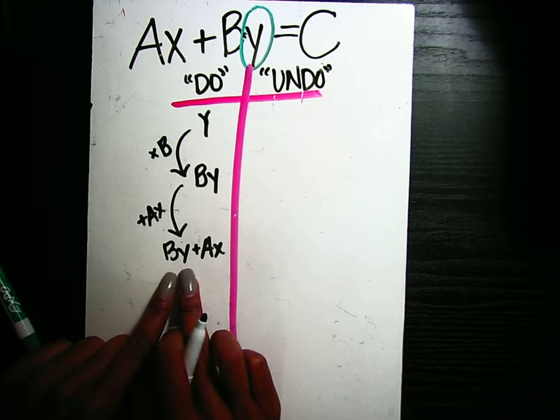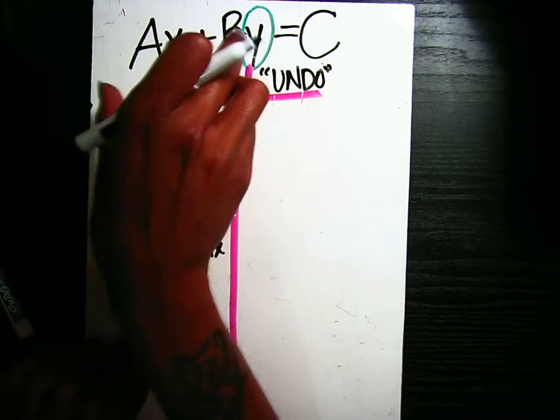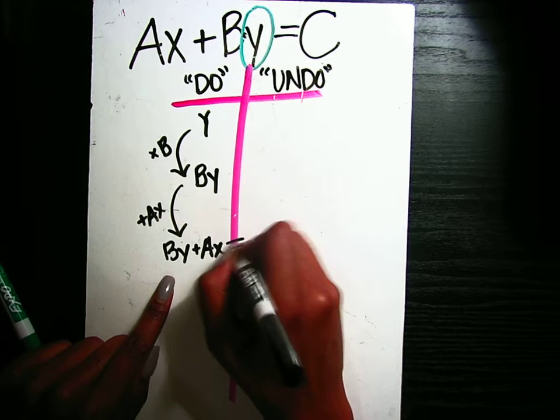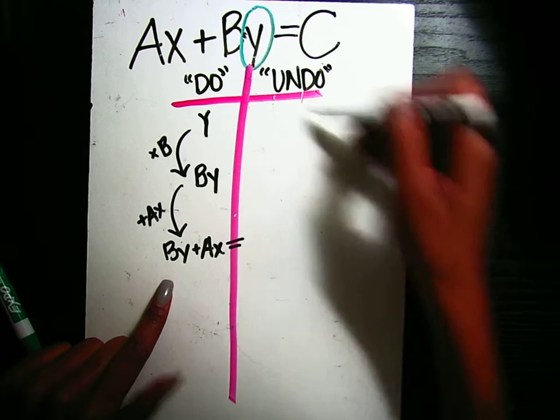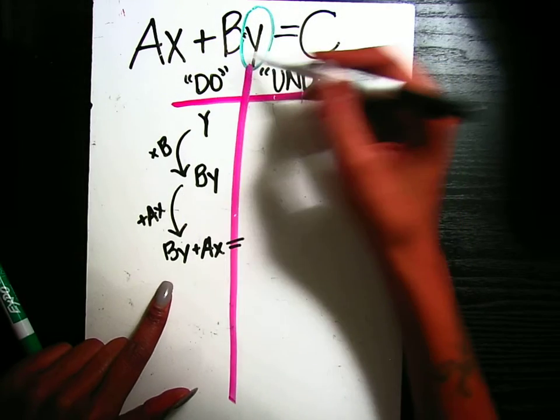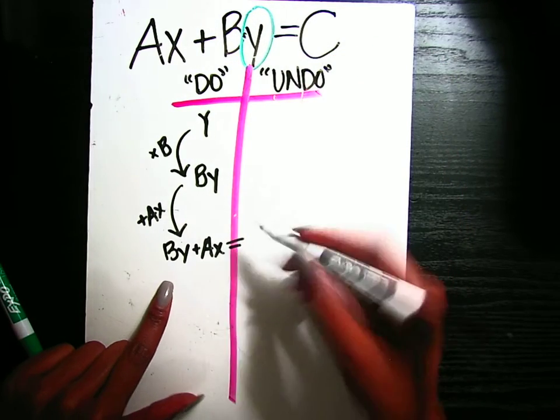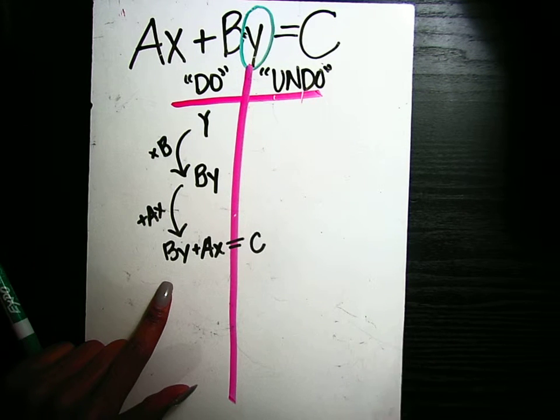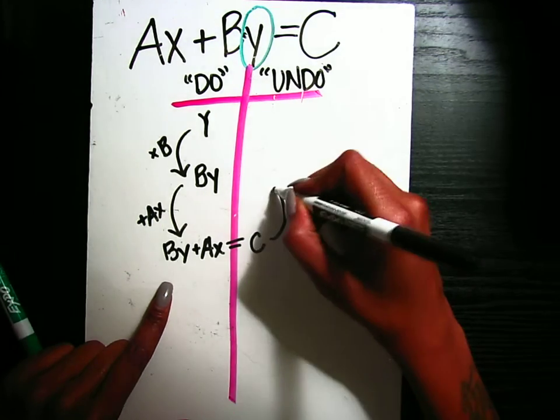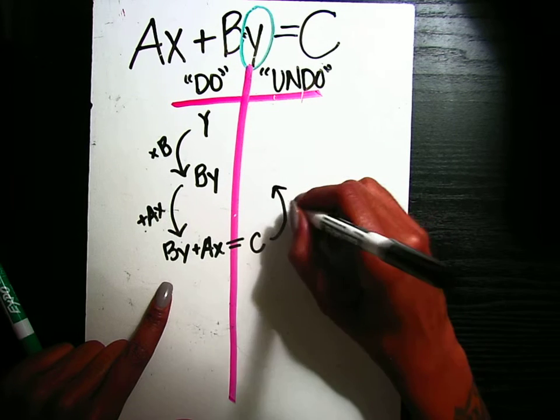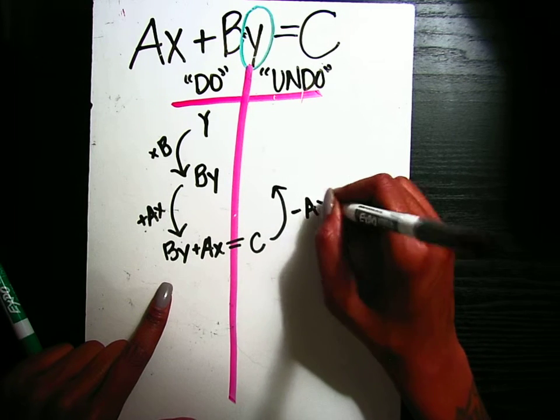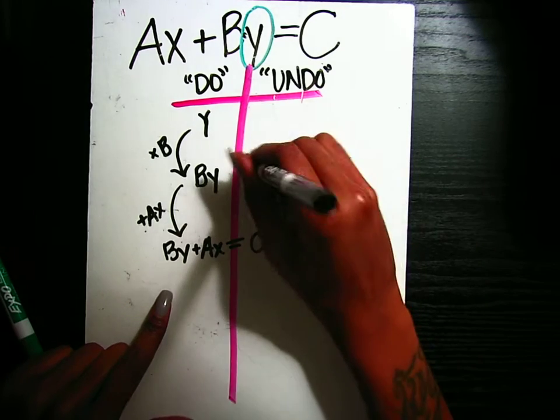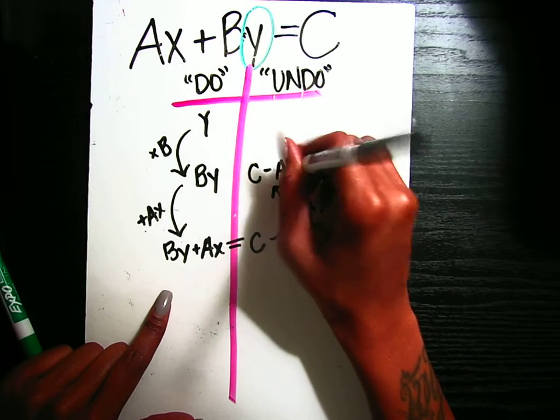So now that I got to this point and I've successfully set up this side of my equation, this is where the equal sign comes in. And I'm going to work backwards. So AX plus BY is equal to C. Now I'm going to go backwards. Here, instead of plus AX, I'm going to subtract AX from both sides. So C minus AX.